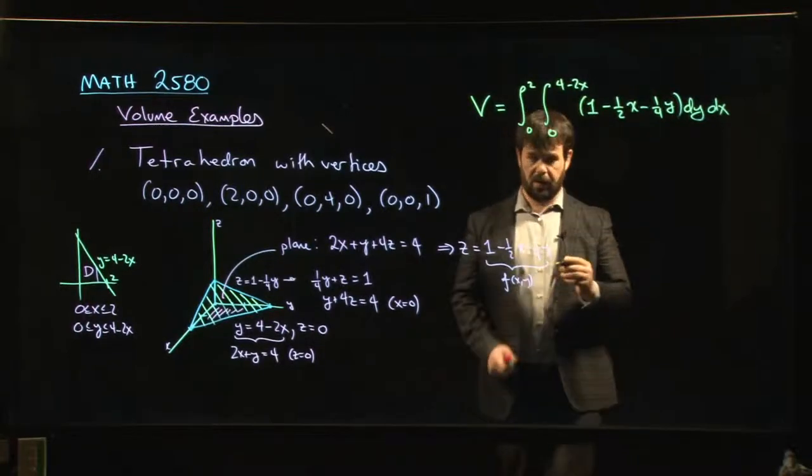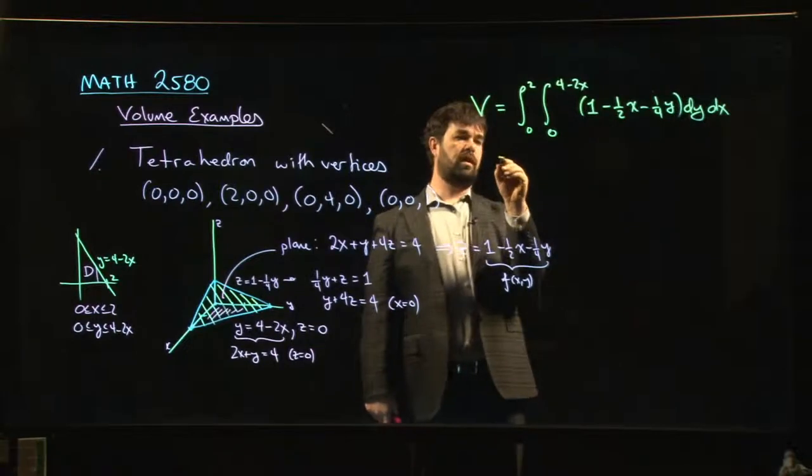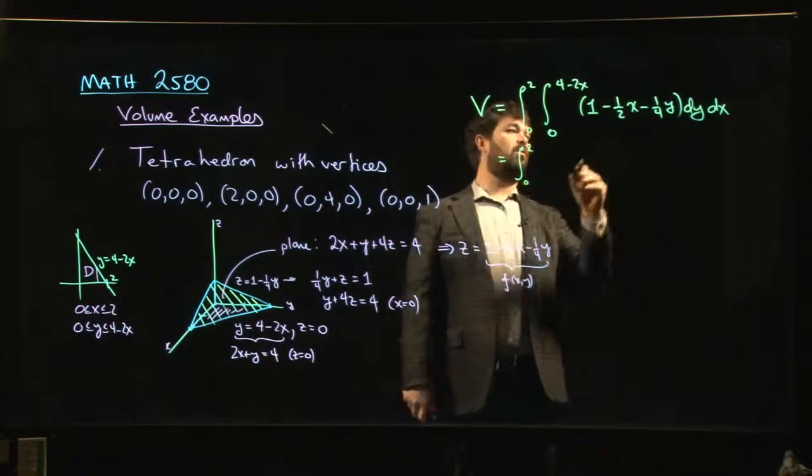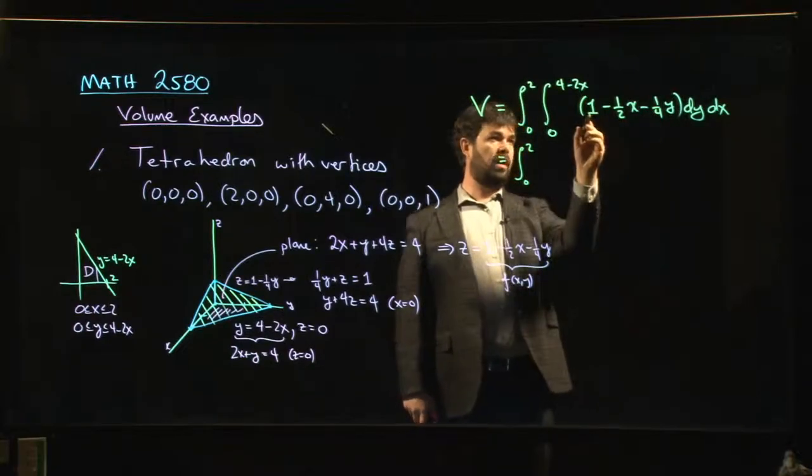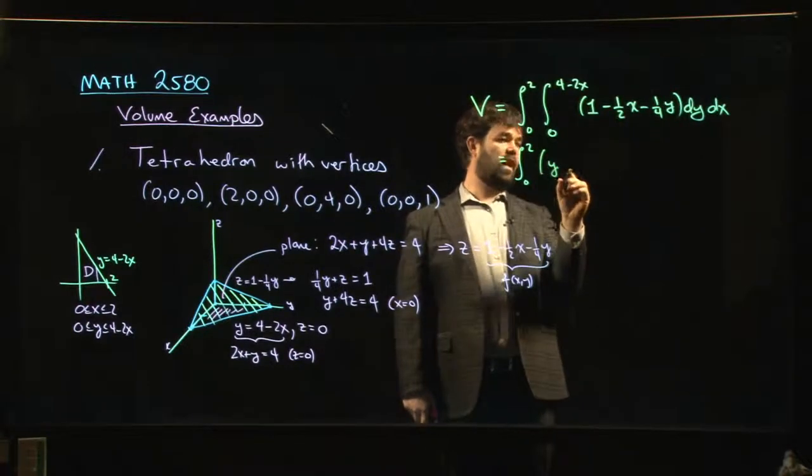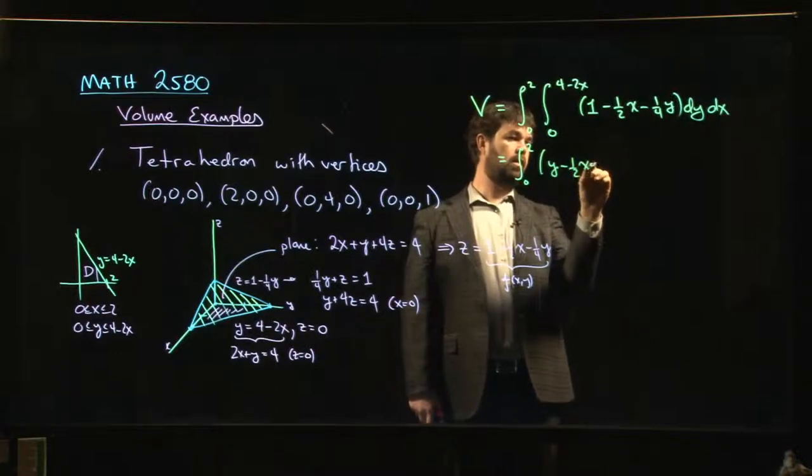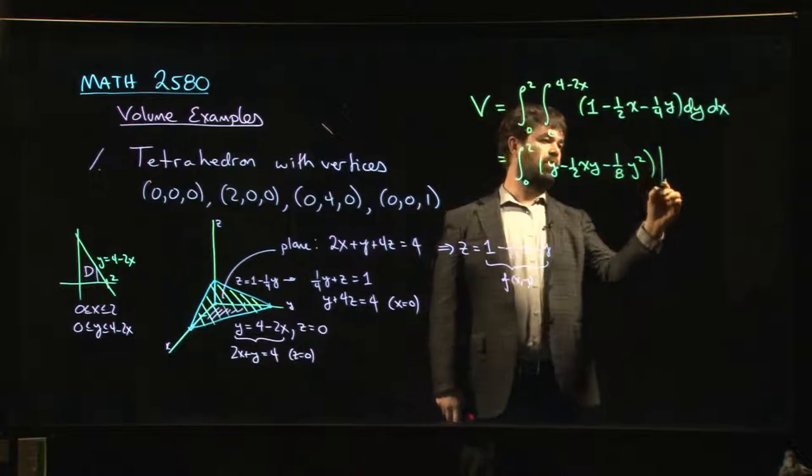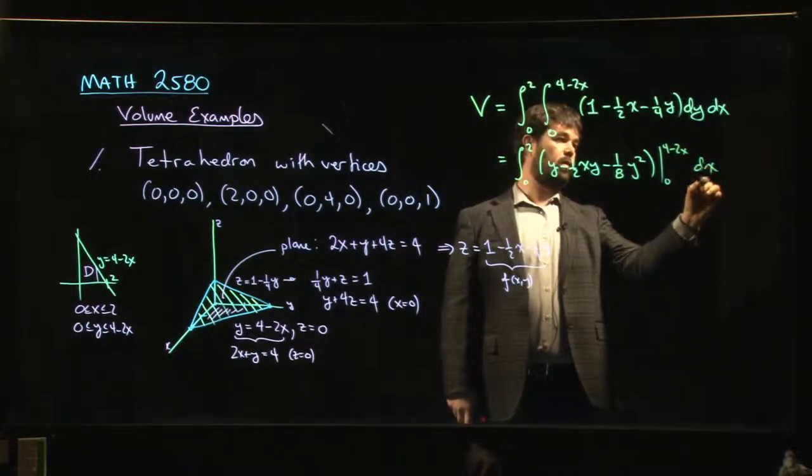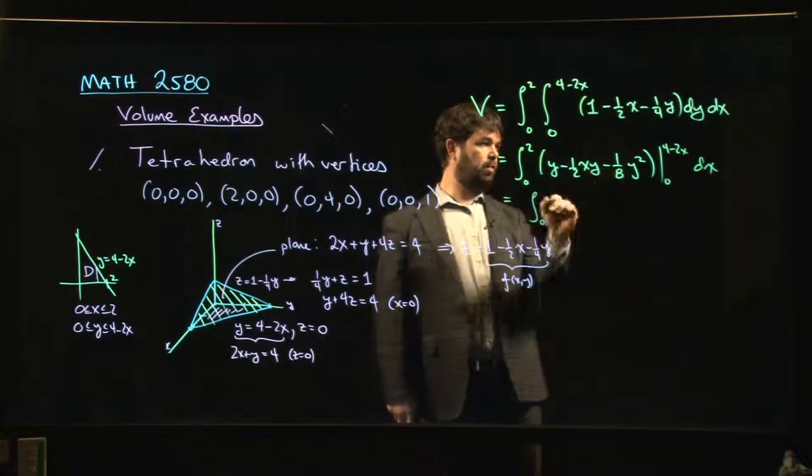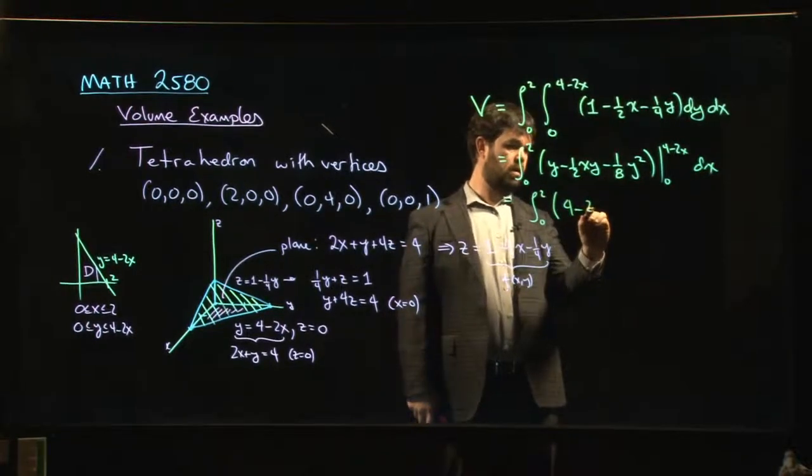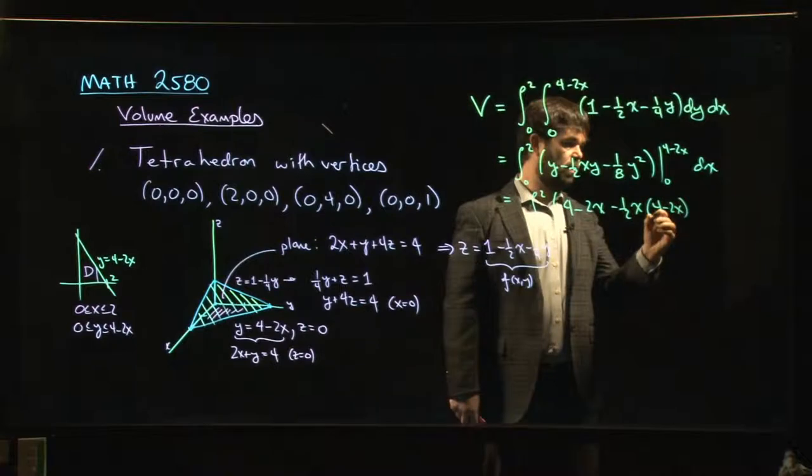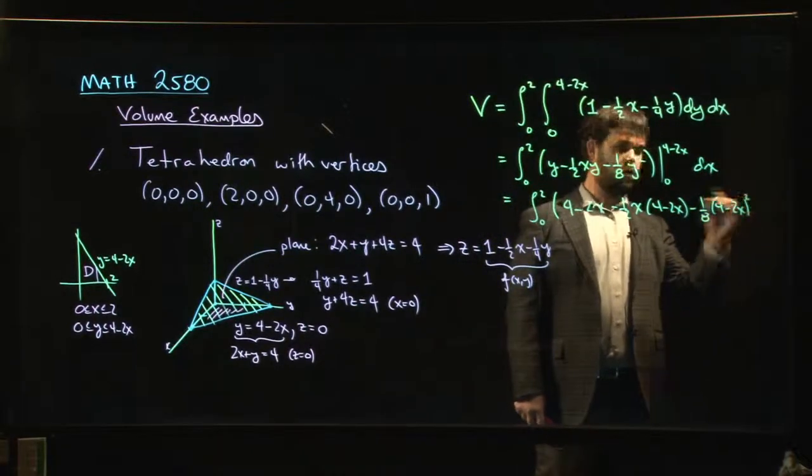So this is a reasonably straightforward integral to carry out. Maybe I'll do the first, the inner integral and the iterated integral just so we can get down to the point where it's a simple calc one integral that I feel confident leaving you all with. So let's see, we're going to have, we're integrating with respect to Y. So the anti-derivative for one is just Y, half X, the anti-derivative is half X Y. And then here I'm going to get one over eight Y squared. And we're going from zero to four minus two X. So let's plug in the limits and leave it at that. We have four minus two X minus one half X times four minus two X minus one over eight times four minus two X all squared.